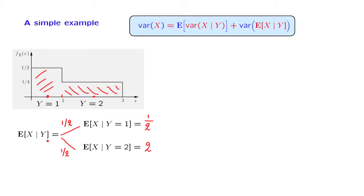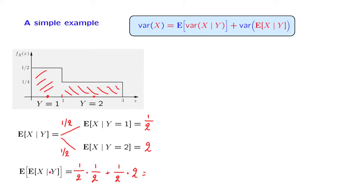So the conditional expectation is a random variable that takes these values with these probabilities. Since we now have a complete probabilistic description of this random variable, we can calculate its expectation. With probability 1/2, the random variable takes the value of 1/2, and with probability 1/2, it takes a value of 2. So the expected value of the conditional expectation is 5/4. The law of iterated expectations tells us this quantity is also the expected value of X, found by the divide and conquer method.